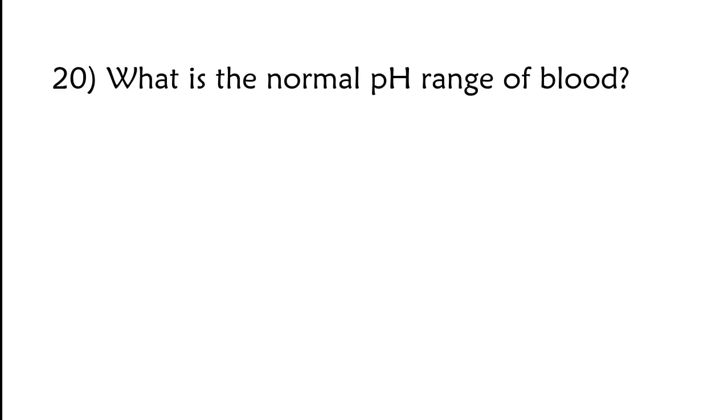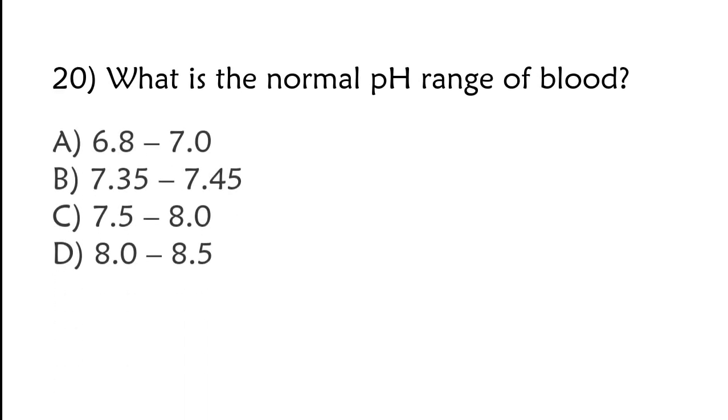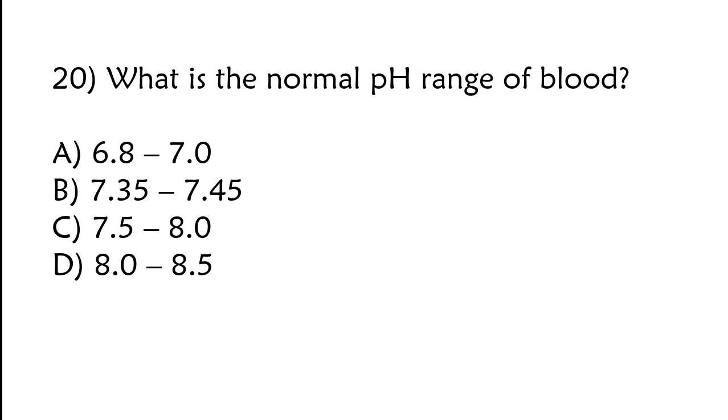What is the normal pH range of blood? 6.8 to 7, 7.35 to 7.45, 7.5 to 8, or 8 to 8.5. The correct answer is option B, 7.35 to 7.45.